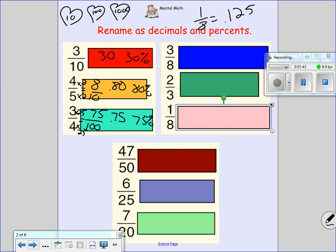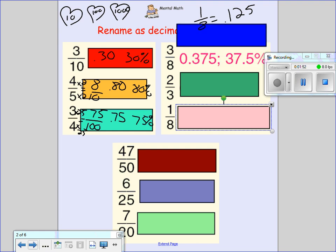Remember that. So what would be 3 eighths? 3 eighths, I'm just going to kind of show you here, would be 1.25 times 3, which would give you 0.375, which we'd be putting in as 37.5 percent.